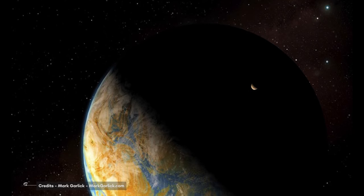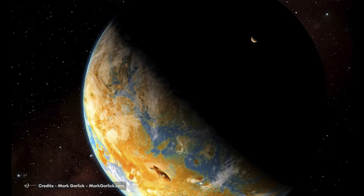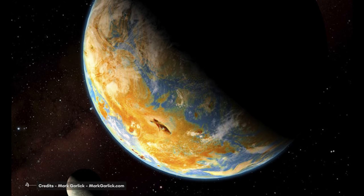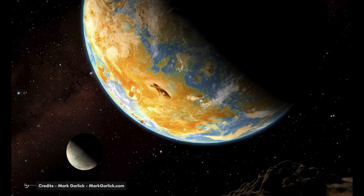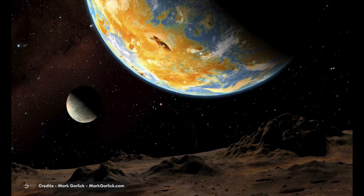Once Gliese 581c was discovered, astronomers continued studying its characteristics. Among others, they estimated that the mean temperature of this super-Earth lies between 0 and 40 degrees Celsius, which means that if there is water it should be in a liquid state.